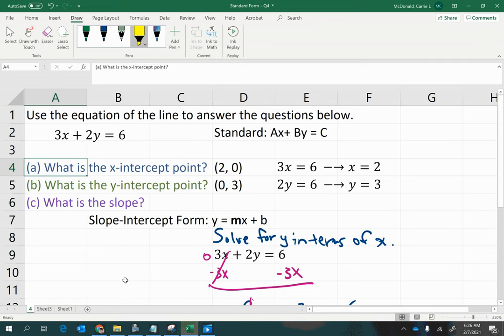But I encourage you to use standard form like I've done because what I would do is for the x-intercept point, I would say, okay, y is 0, so just ignore this part. And then I can see that I just need to divide 6 by 3 to get my answer of 2.